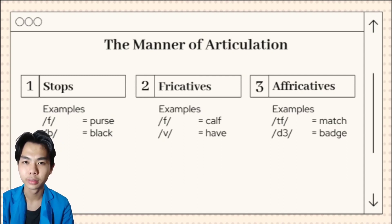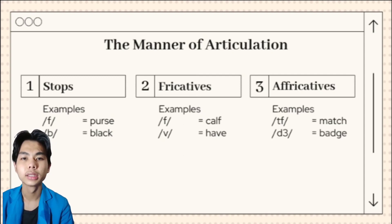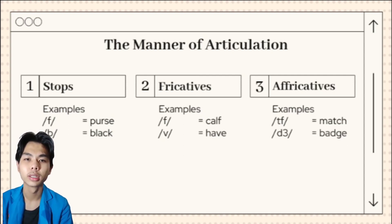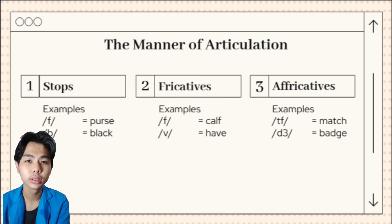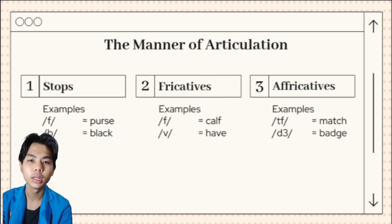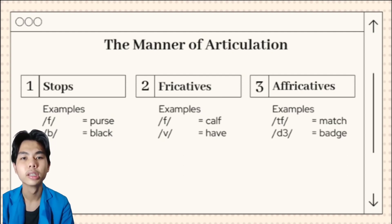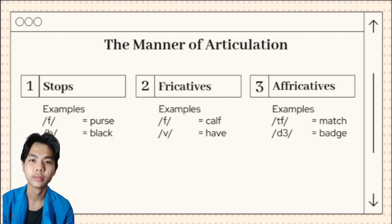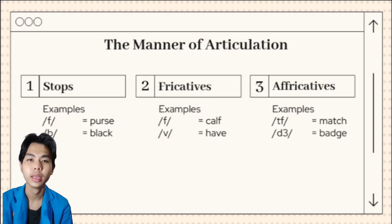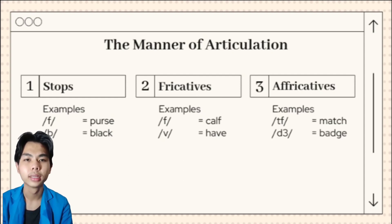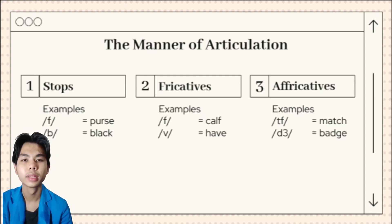Second is fricative. While nasal and stop consonants involve complete blockage of the vocal tract, fricative sounds involve only a partial blockage of the vocal tract, so that air has to be forced through a narrow channel or a passage. Example: F is first in the sentence, and V is back in the sentence.